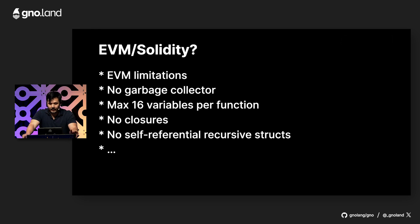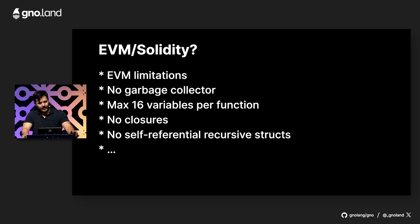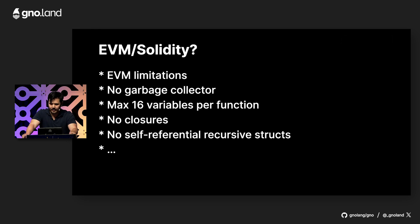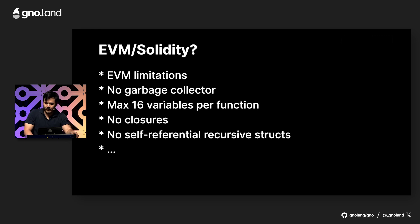Solidity has a lot of limitations — partially because it's a new language, but primarily because of the limitations of the EVM. Solidity has no garbage collector, every function is limited to 16 variables, it doesn't support closure functions, and you can't even declare self-referential recursive structures to create linked lists or trees. So why are Rust, C, C++, and Haskell not more popular than Solidity?